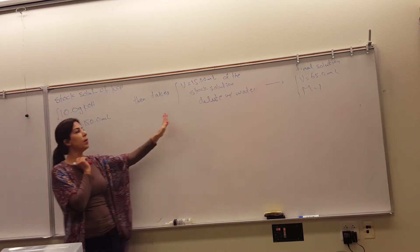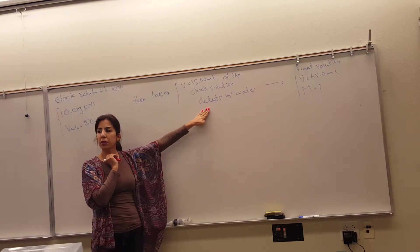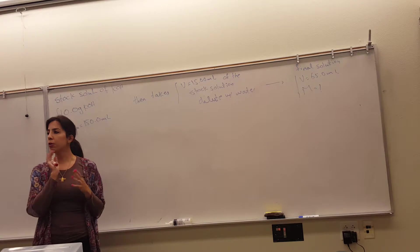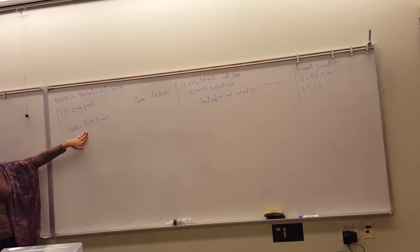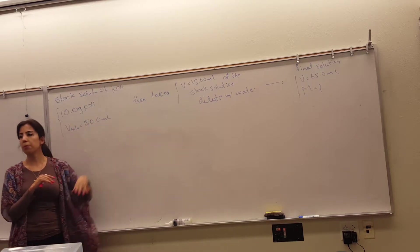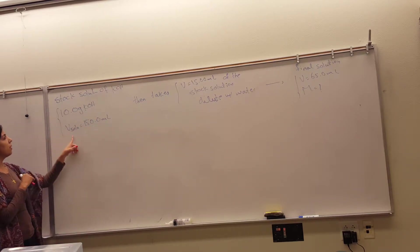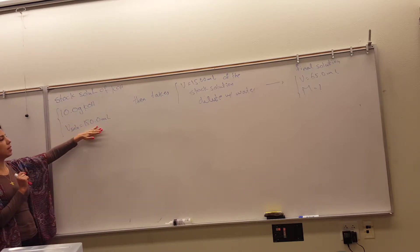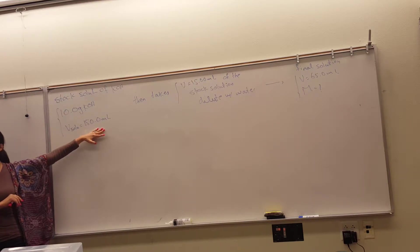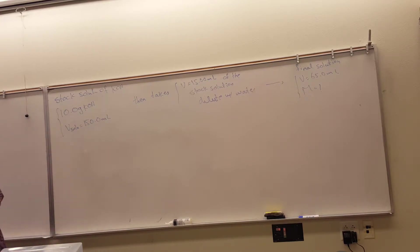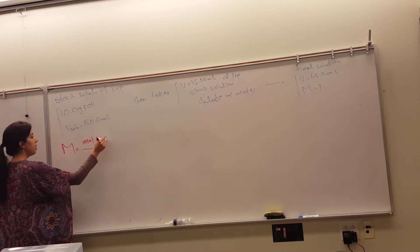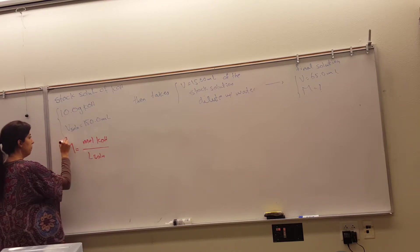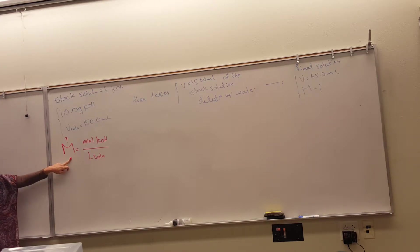To find the final molarity, we'll first figure out the molarity of the stock solution, then plug it into M1V1 = M2V2 to find the molarity of the final solution. Starting from the beginning: the student gets 10 grams of potassium hydroxide and makes a 150 milliliter solution. Molarity is moles of potassium hydroxide over liters of solution, so we're solving for the molarity of that very first solution.